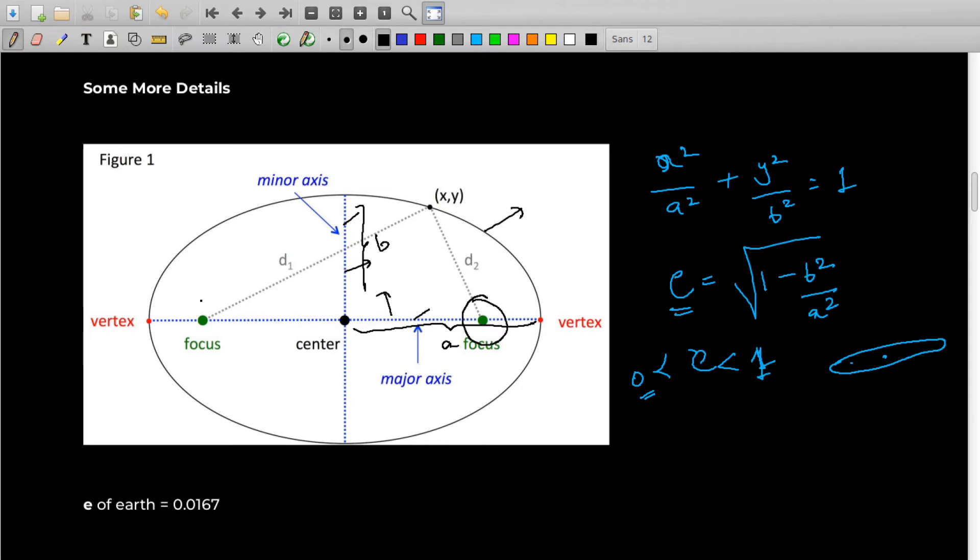So why am I telling all this? There is something called aphelion and perihelion. Let me explain that. If the Sun is here and the planet is here, this position is called aphelion, the farthest position of the planet from the Sun. If the planet is here, then it is called perihelion.